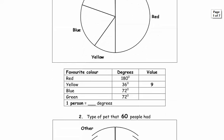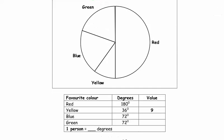Let's have a look at the table below it. They have given you the angles — it's not always the case. What do the angles in a pie chart have to add up to? 360 degrees. So we need to check that all those add up to 360 degrees. The values need to add up to 90 people.